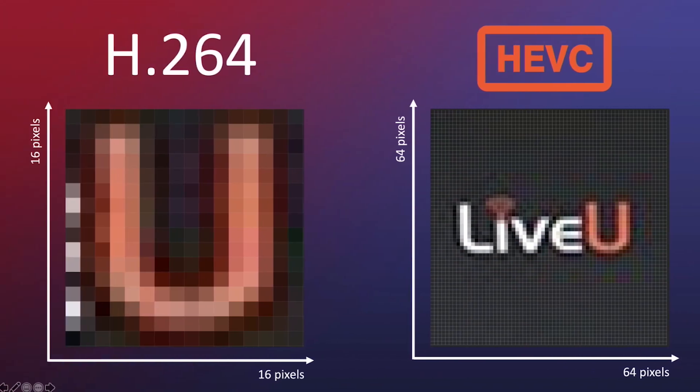To explain, let's look at the LiveU logo. On the right you'll see the U, which is 16x16 pixels. On the left, the complete LiveU logo in 64x64 pixels. This is the area that the algorithm uses to compare changes.